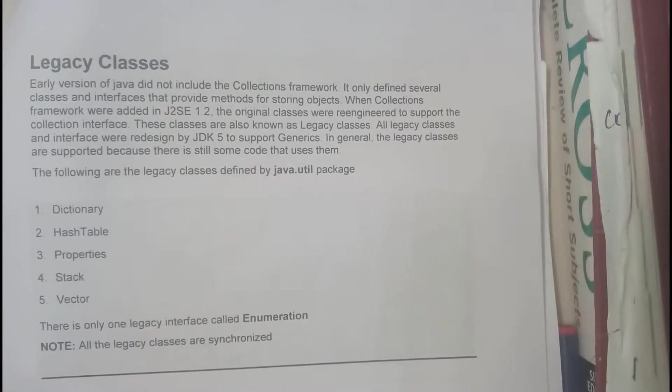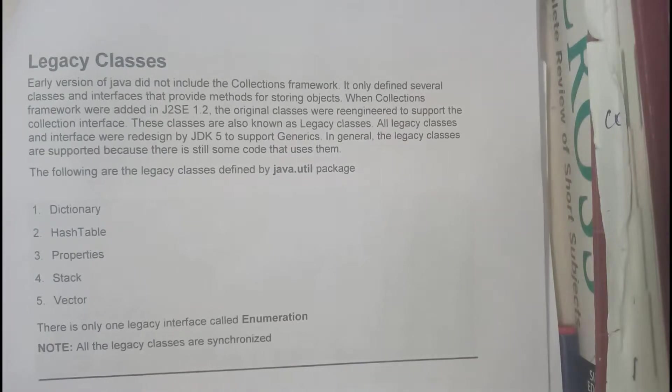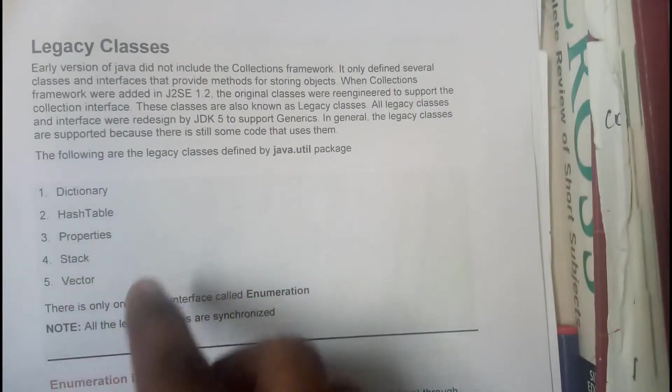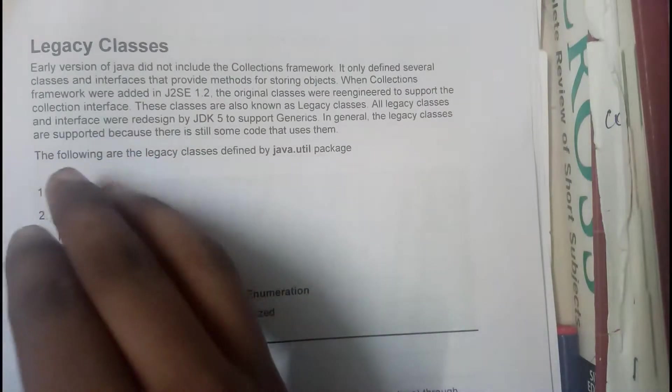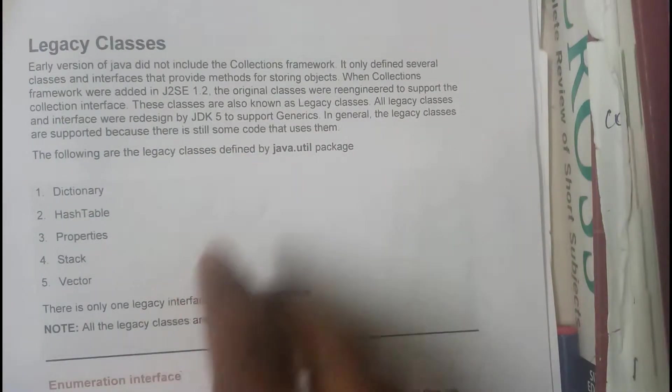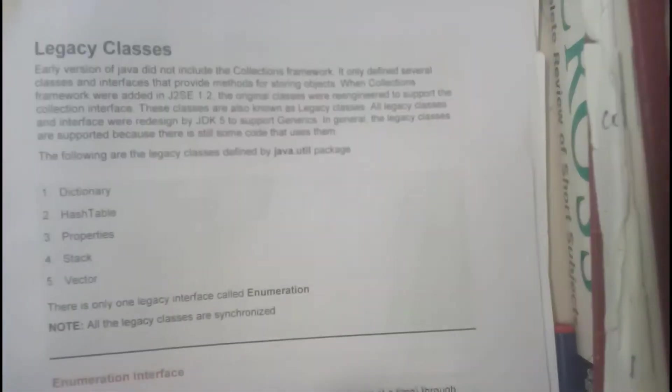Before the introduction of collections, every kind of operation was done using classes and interfaces only. These are the few classes: dictionary, hash table, properties, stack, and vectors. These are the things we used before Java version 1.2.